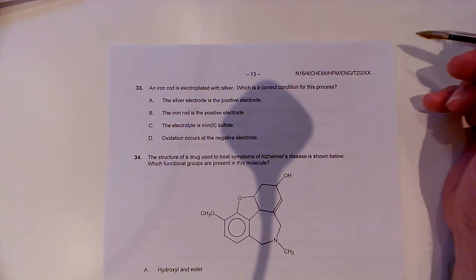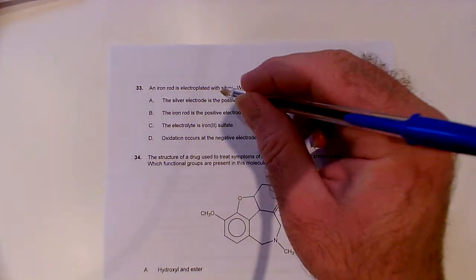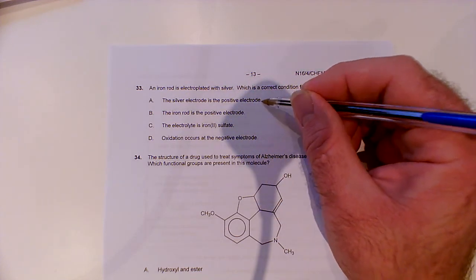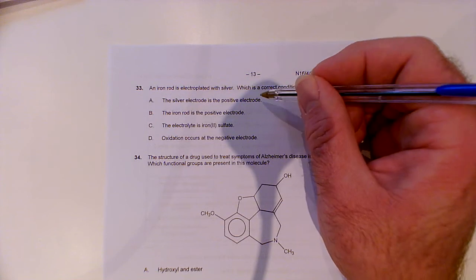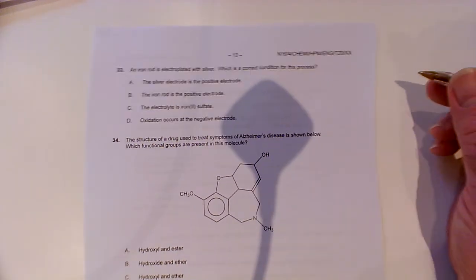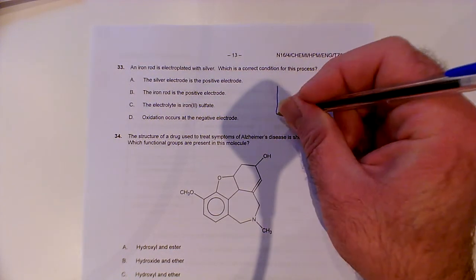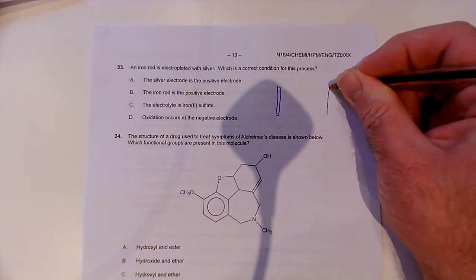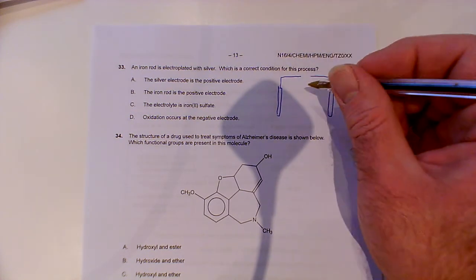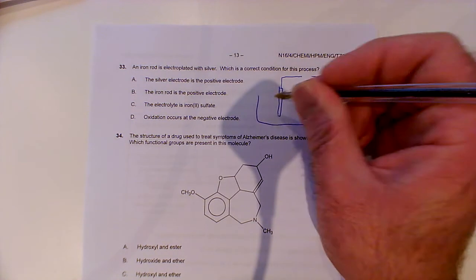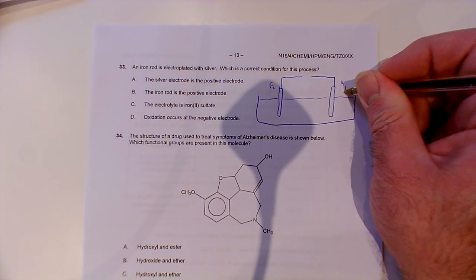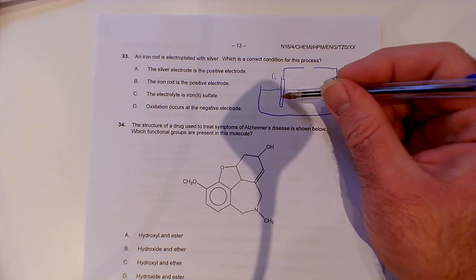Question 33. An iron rod is electroplated with silver. Which is a correct condition for this process? Silver electrode is the positive rod, iron rod is the positive electrode. Already I'm kind of... That's quite a good clue here. You think it must be one of these two. Because if that one's wrong, that one must be right and vice versa. So hopefully I won't need these other two. Let's think about the process. If I've got two rods, and I'm going to connect them up in a circuit, I haven't decided on the battery yet, which way I'm going to put the polarity. Let's make this one the iron one and let's make this one the silver one.